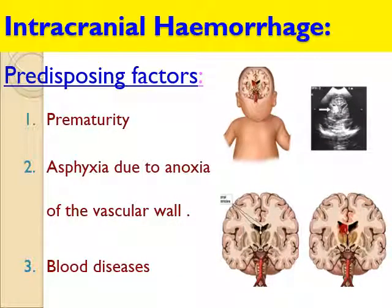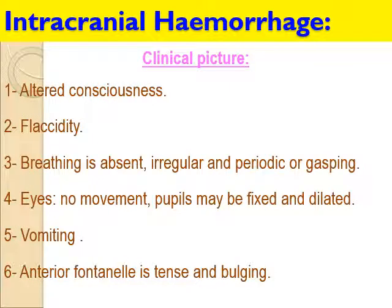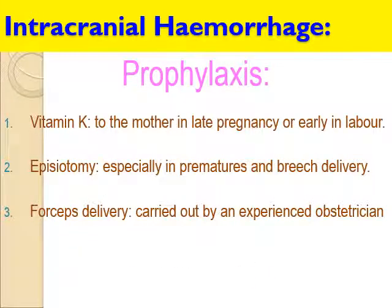There are predisposing factors. Not every baby exposed to compression and decompression is affected. The premature baby is more vulnerable, the baby with a blood disease is more vulnerable, and the baby with ischemia or asphyxia in the vascular system is also more vulnerable. Intracranial hemorrhage manifests after delivery by difficulty in breathing, vomiting, bulging of the anterior fontanel, and altered consciousness. Prophylaxis includes vitamin K, performing an episiotomy, and ensuring good forceps delivery.